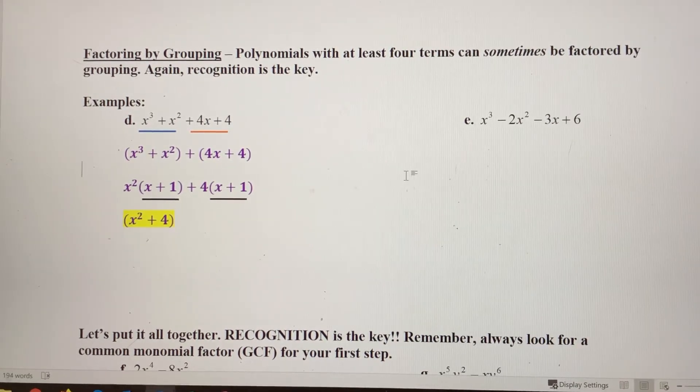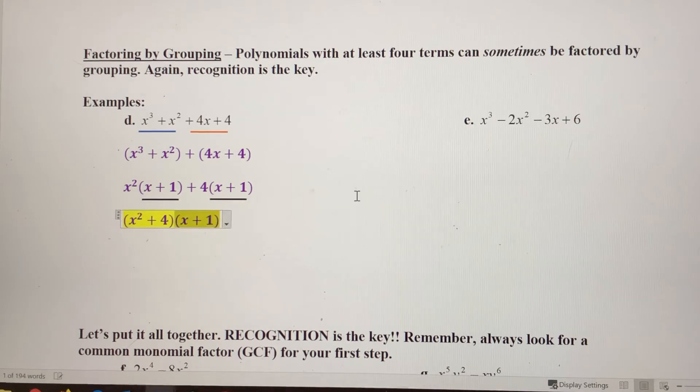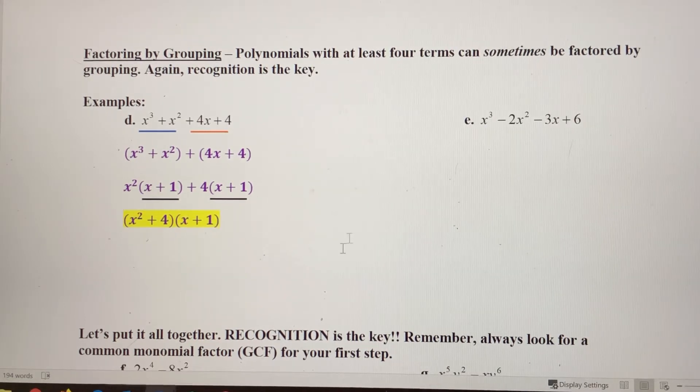So x squared plus four, and then our second binomial factor would be the matching factor here, x plus one.